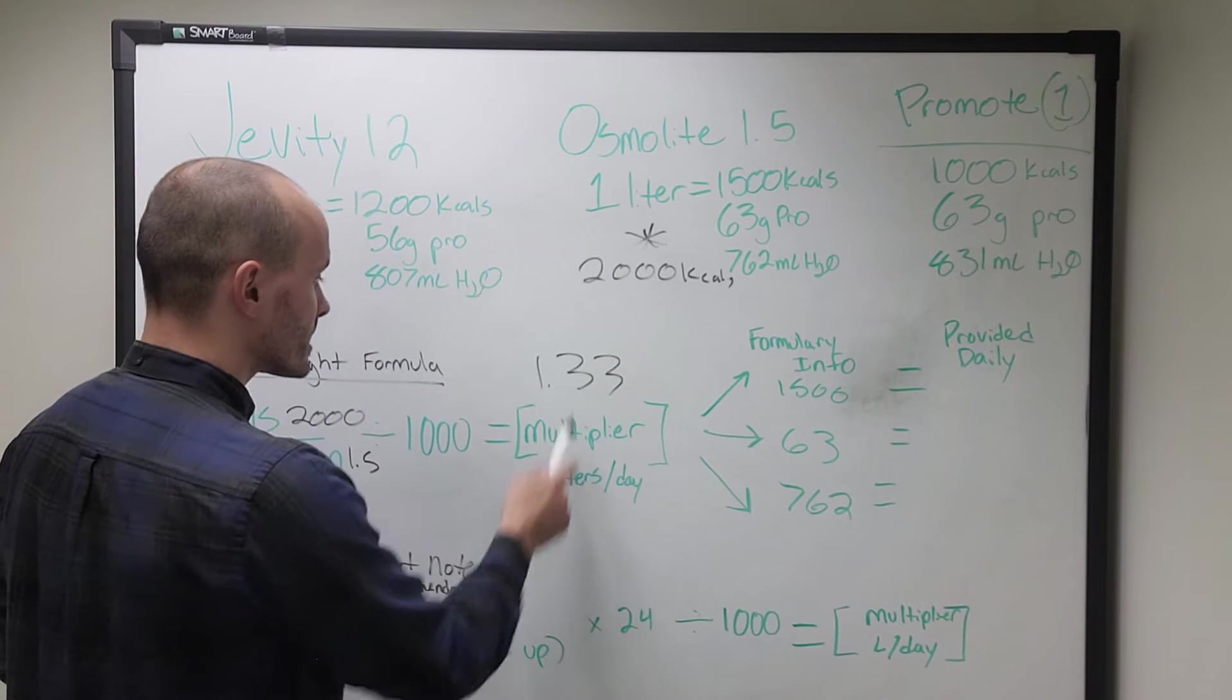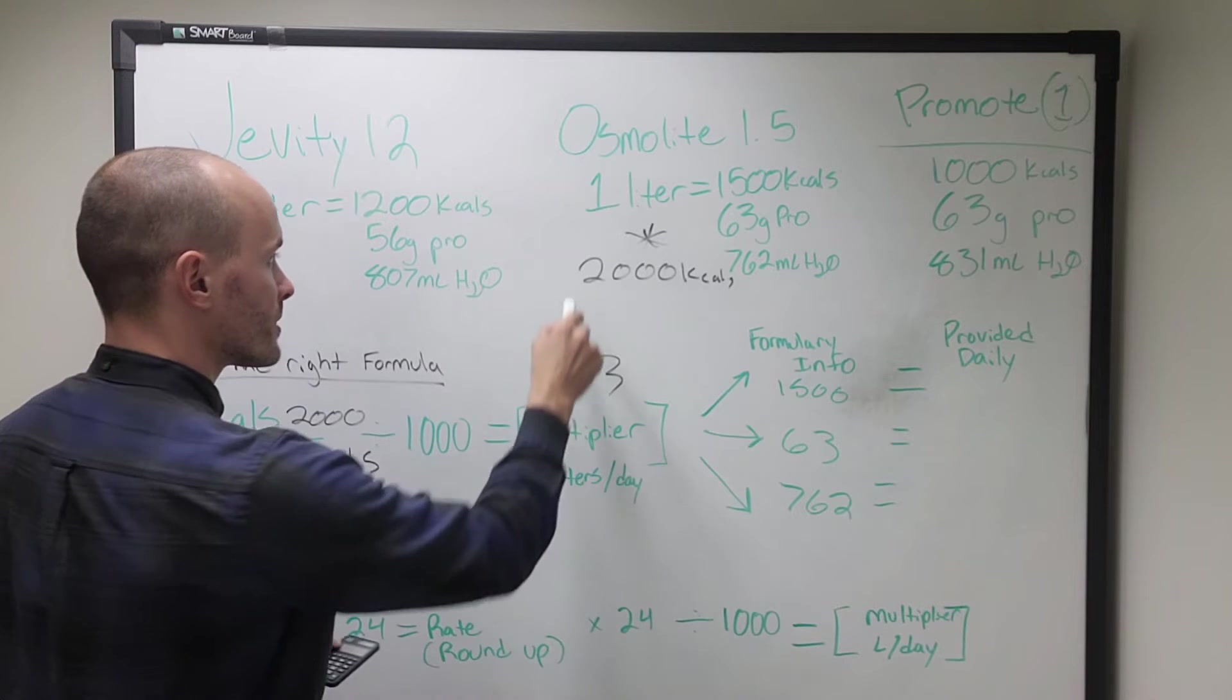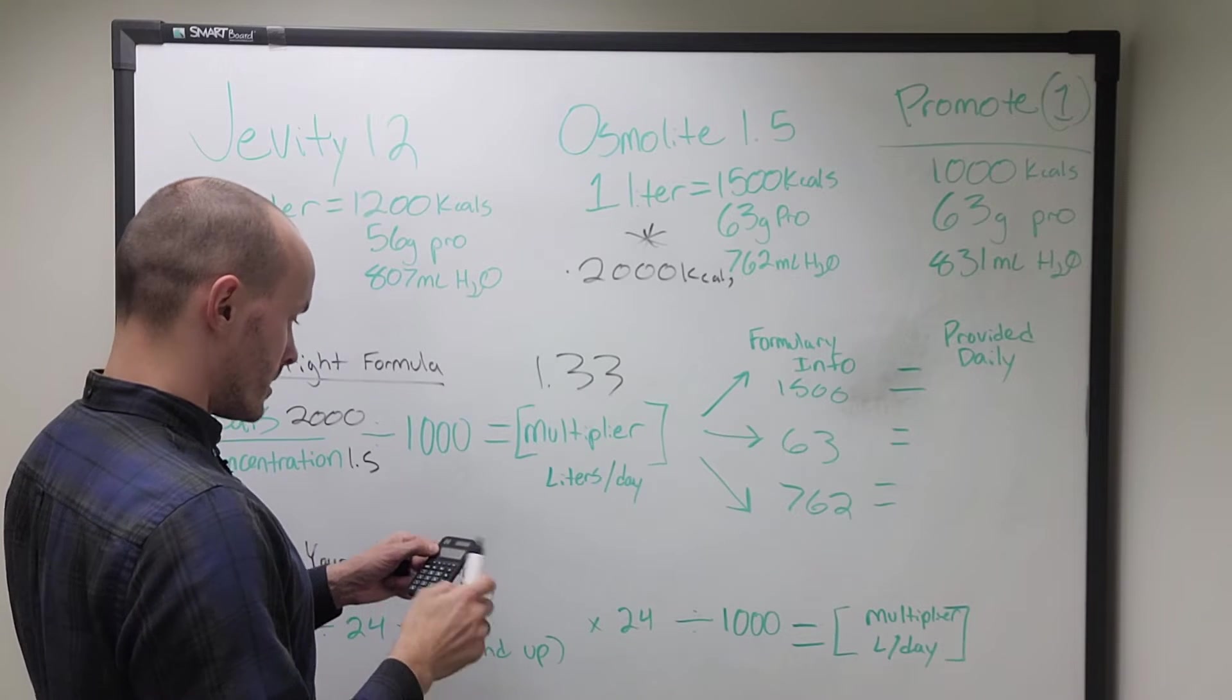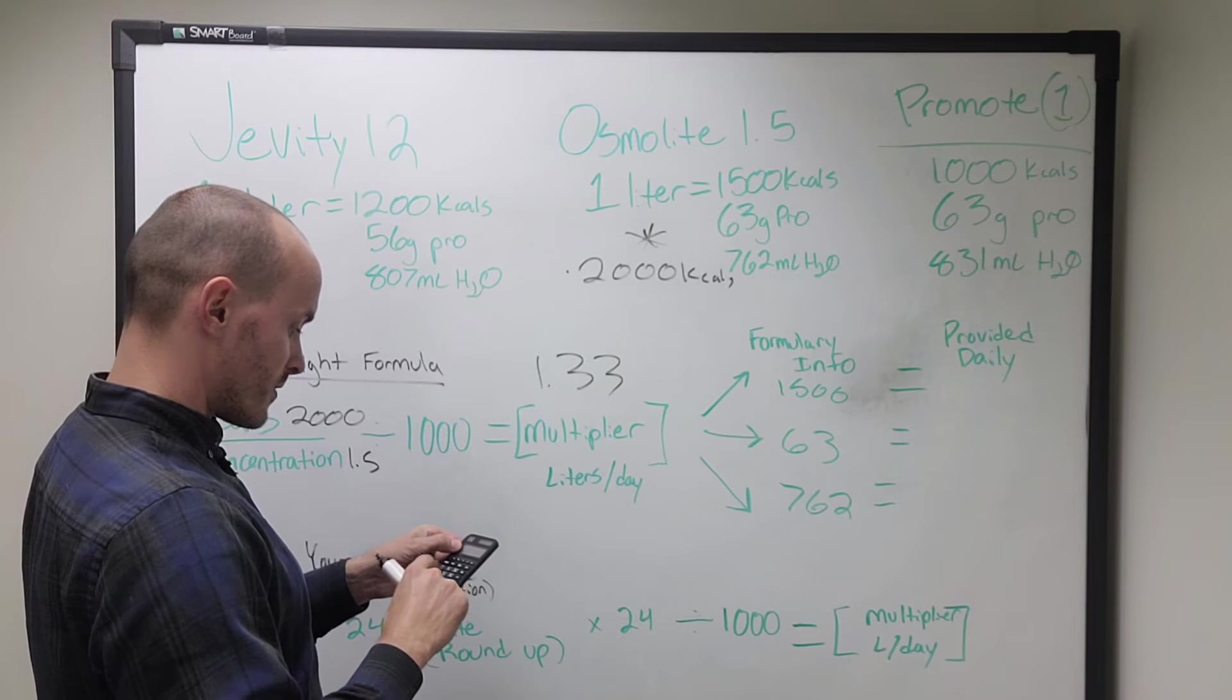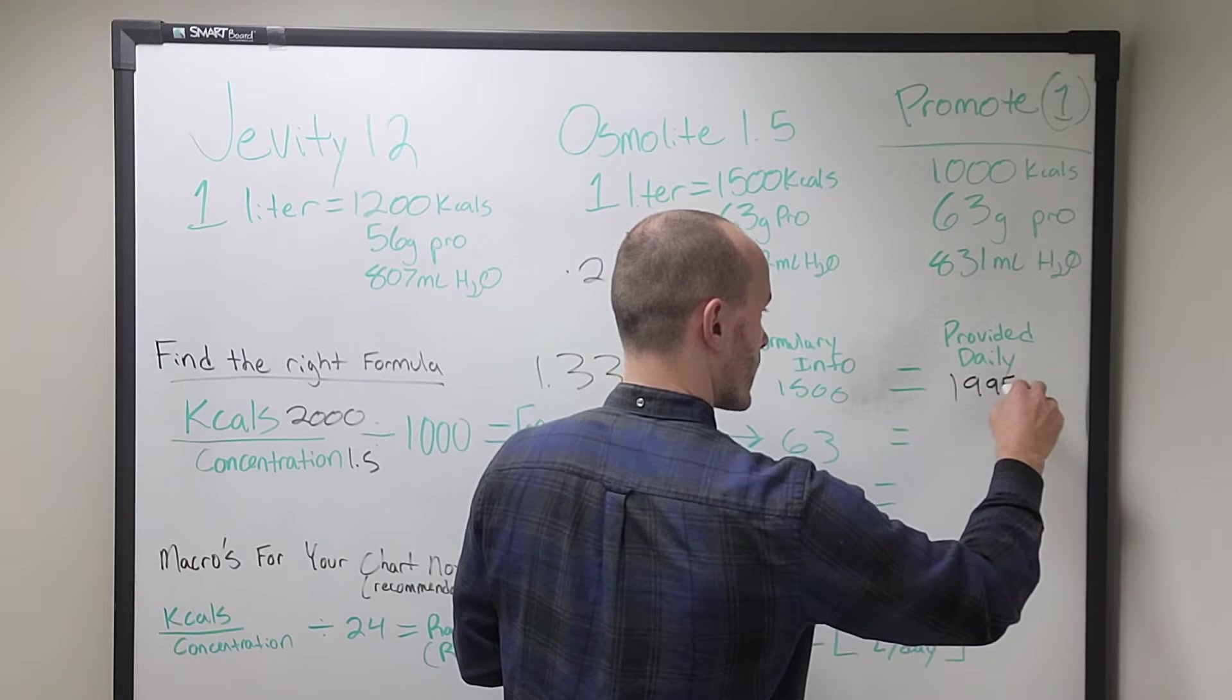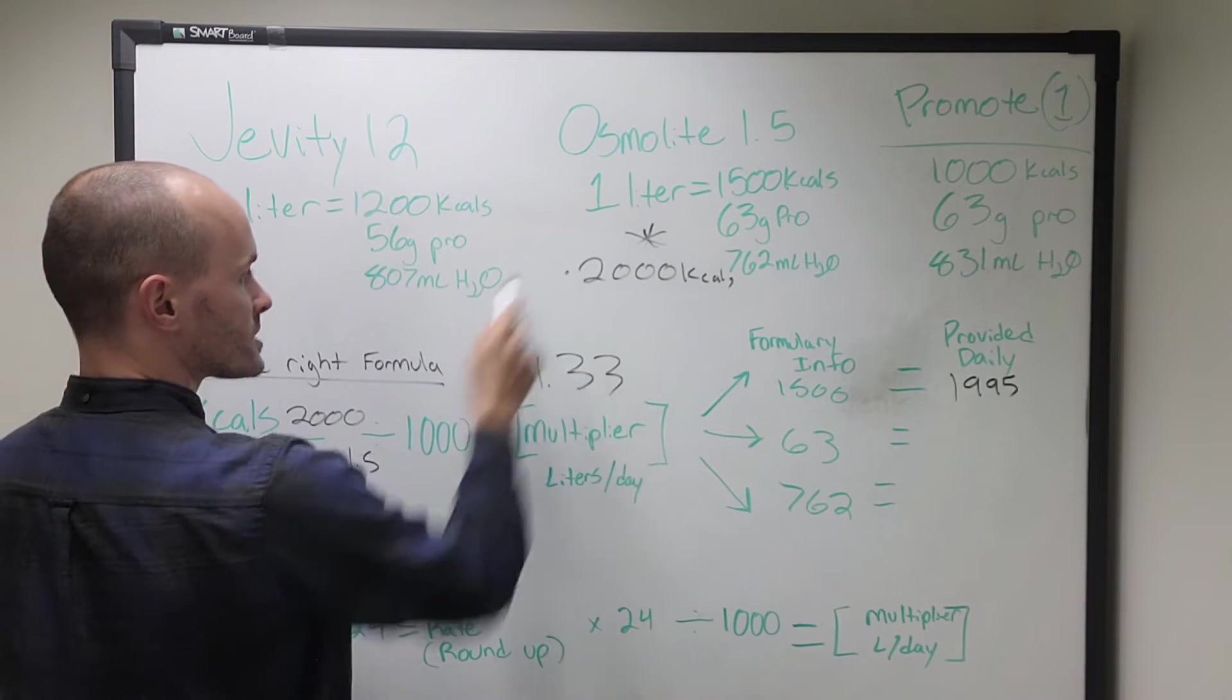So this is how many liters per day the patient needs on osmolite 1.5 to get 2,000 calories. So let's go ahead and run these numbers. So we take our 1.33 repeated times 1,500. We get, what would you expect? Right around 2,000 calories, just like we wanted.